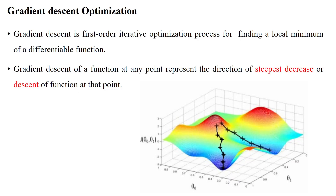Hello everyone. When we are applying gradient descent optimization, there are some issues that can happen due to the number of layers we have in the network. When we apply gradient descent optimization during back propagation for calculating the gradients, there is a possibility that the number of gradients will increase when we have more hidden layers. Now we will see what issues can happen.